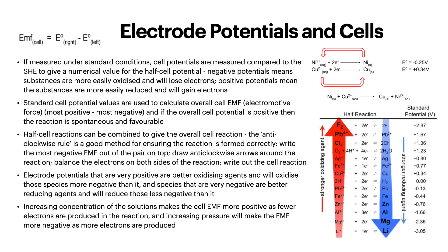Electrode potentials that are very positive are better oxidizing agents and will oxidize those species more negative than them. Any species that are very negative are better reducing agents and will reduce those less negative than them. Increasing concentration of the solutions makes the cell EMF more positive as fewer electrons are produced. Increasing pressure will make the EMF more negative as more electrons are produced. You can see here how oxidizing and reducing agents impact the standard potential, and an example of how you would combine these half-equations.